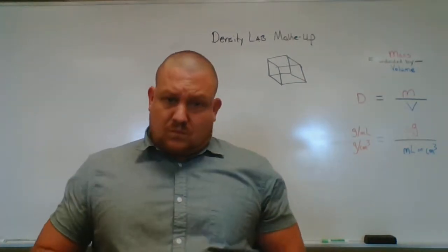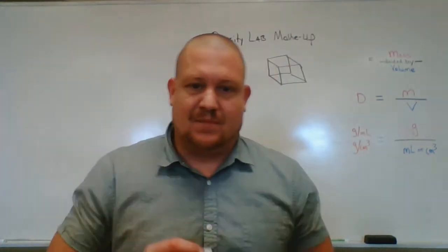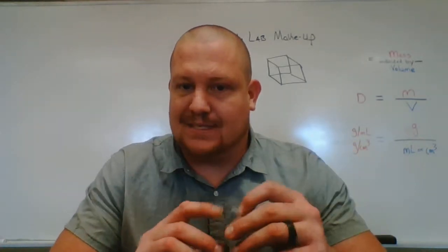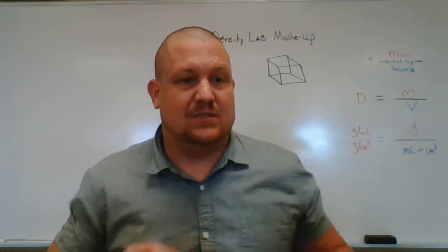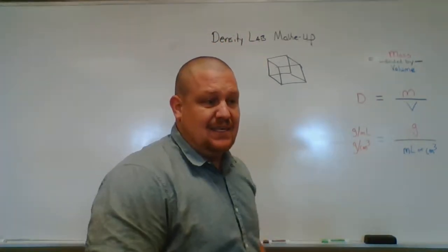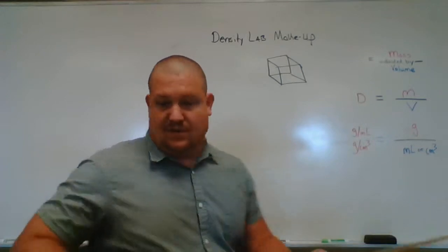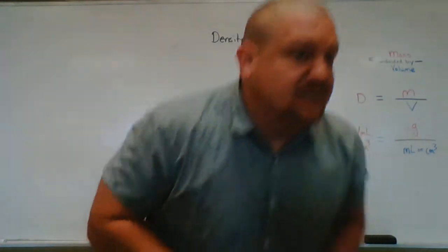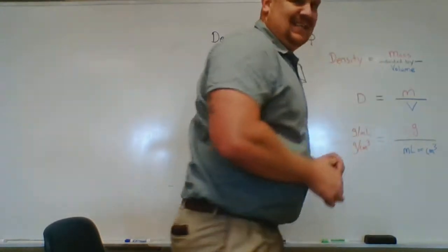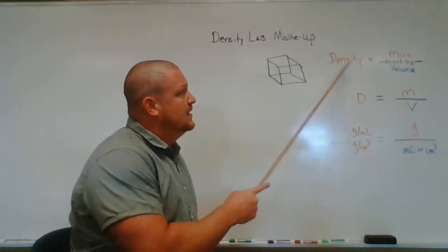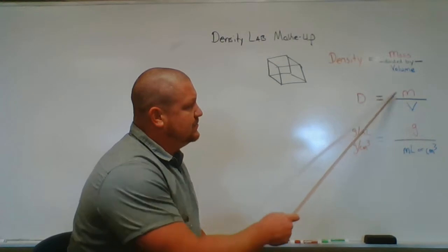We're going to start by finding the density of this aluminum block. It's shiny and metallic — a rectangular solid, basically a cube. To find the density I need my formula, so let me grab my marker. Density equals mass divided by volume, so our variables are: D equals M divided by V.